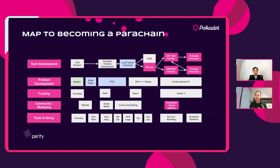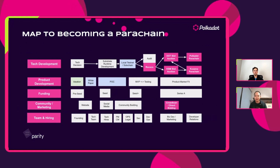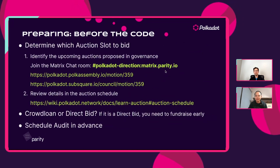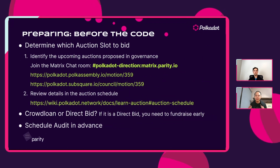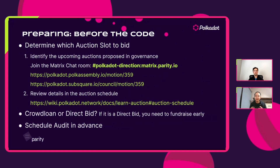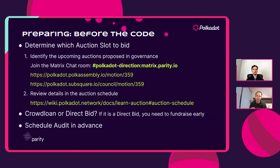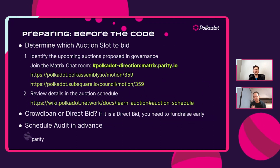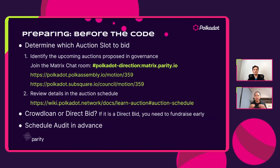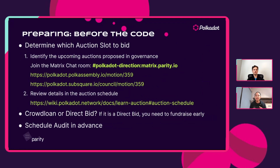Specifically, things like the ability to be on one of our key testnets, Rococo, the ability to do crowdloan auctions or direct bidding. Before you dive deeper into code, we recommend starting to register yourself. A key area is to join the Matrix chat room called Polkadot Direction at Matrix.parity.io. Another key thing is that parachain auction slots are run by governance through Polkadot, so definitely keep your eye out for them.